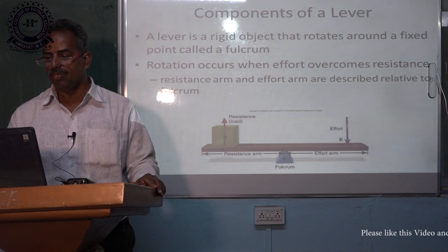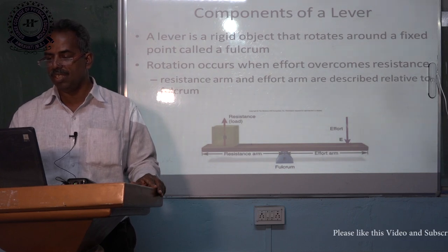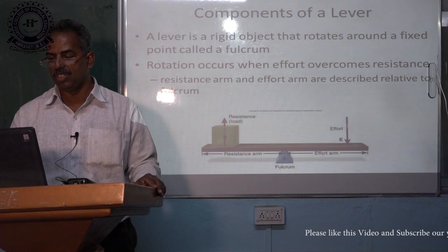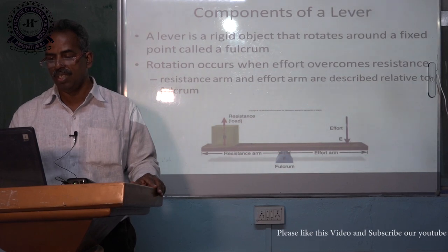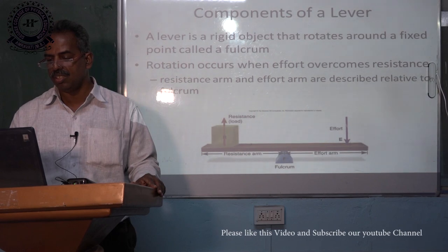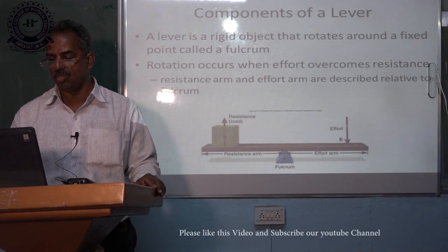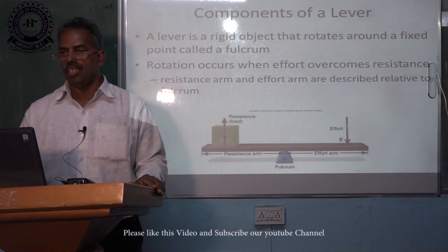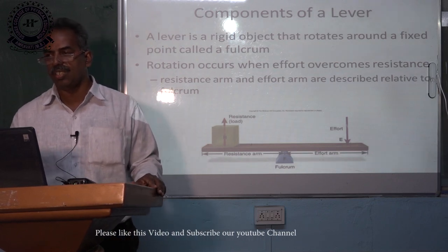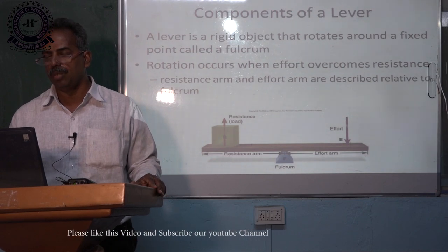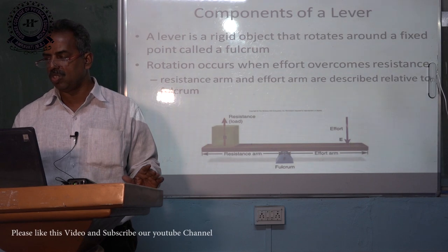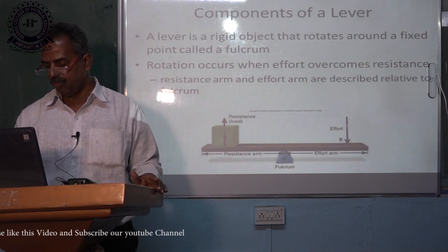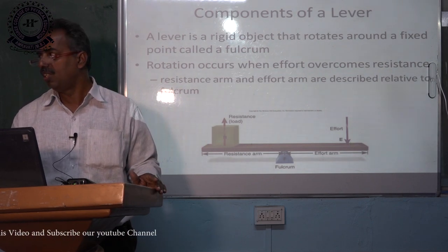The components of a lever: a lever is a rigid object that rotates around a fixed point called the fulcrum. Rotation occurs when effort overcomes resistance. Resistance arm and effort arm are described relative to the fulcrum. How we define the resistance arm and effort arm depends upon the position of the fulcrum. If the position of the fulcrum changes, the length of the force arm and resistance arm will also change.